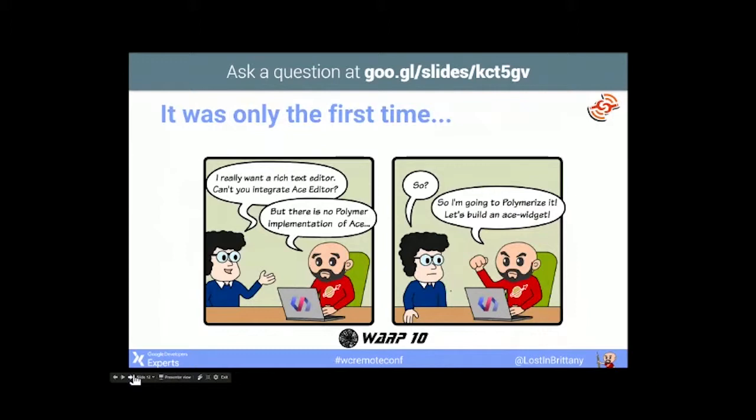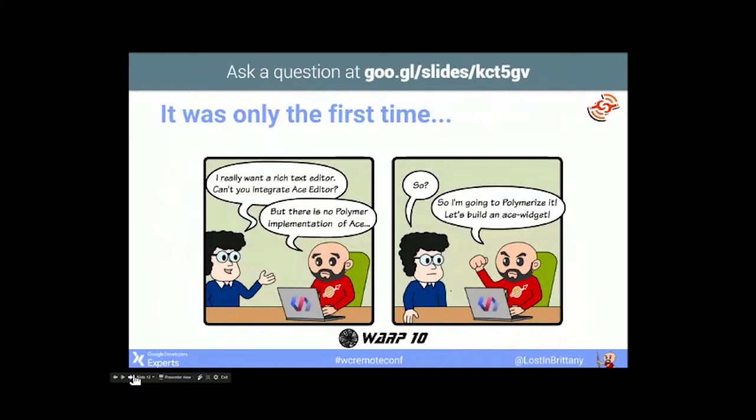And it was only the first time — the question came again and again. 'Hey, I need to integrate ACE editor in our application.' Okay, I'm going to wrap ACE editor in a component. 'Hey, I need to integrate a new floating backend, C3, in our application.' Okay, let's wrap it in a web component.